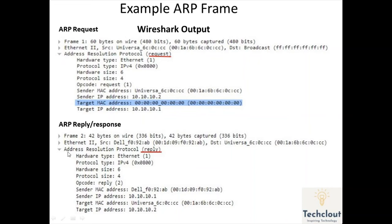Now let's look at the ARP reply message in Wireshark. It is identified by operation code 2. Here we have the sender MAC address — Computer D's own MAC address — and Computer D's source IP address. The target MAC address is the MAC address of the ARP request source machine, and the target IP address is 10.2, the source IP of the original ARP request machine.